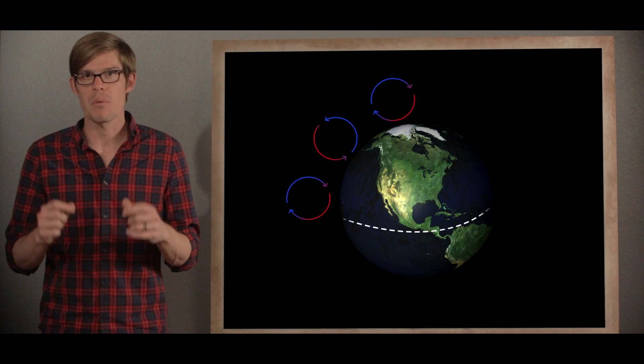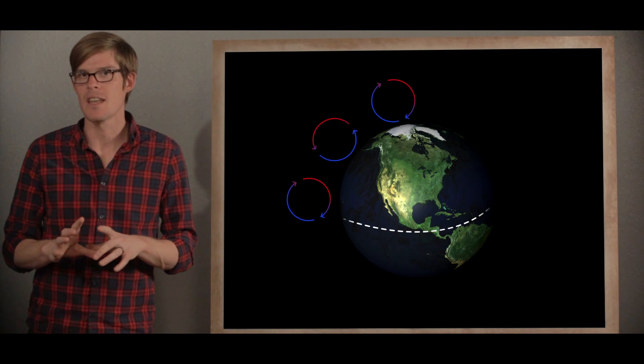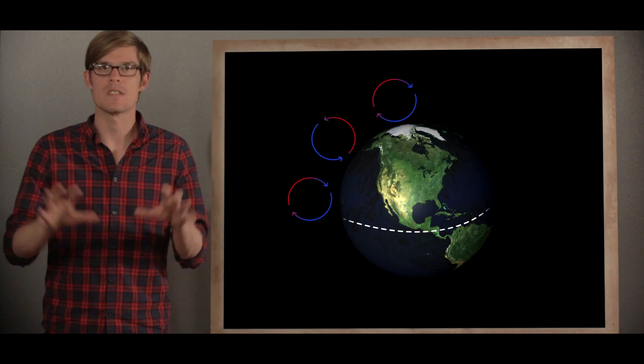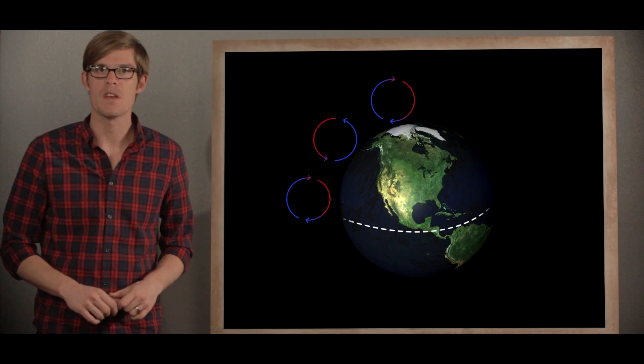Near the poles, there's not as much heating by the sun, and that cold, dense air sinks down toward the Earth. Right along the equator, that creates this area with almost no wind, called the doldrums.